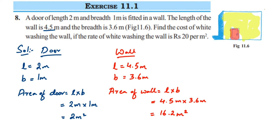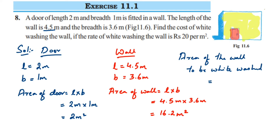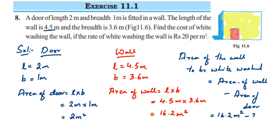Now we find the area of the wall to be whitewashed. Area to be whitewashed = area of wall minus area of door = 16.2 meter square minus 2 meter square = 14.2 meter square. So 14.2 meter square is the area that has to be painted or whitewashed.